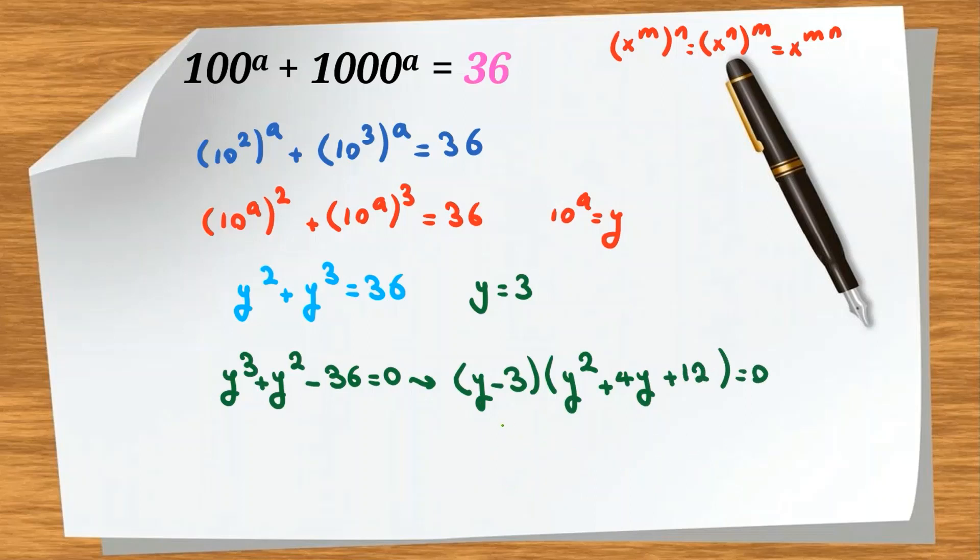Now, product of two terms equal to 0. First one is 0, we've checked this, y equals 3, or second one is 0. We want to prove the second one cannot be 0 in real numbers.